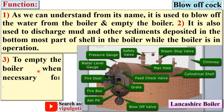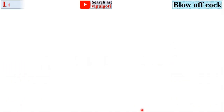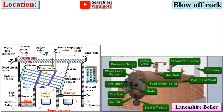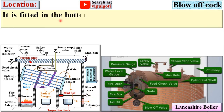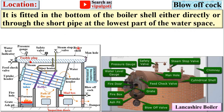The third function is to empty the boiler when necessary for cleaning, repair, and inspection. Now, the location of the blow-off cock: in this Babcock and Wilcox boiler, you can see it is fitted at the bottom of the boiler shell, either directly or through a short pipe, at the lowest part of the water space.